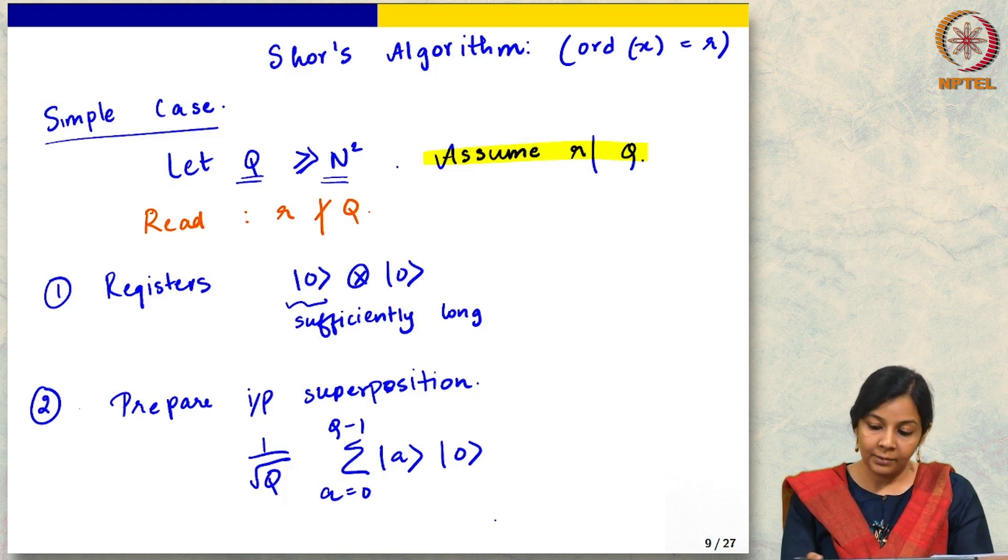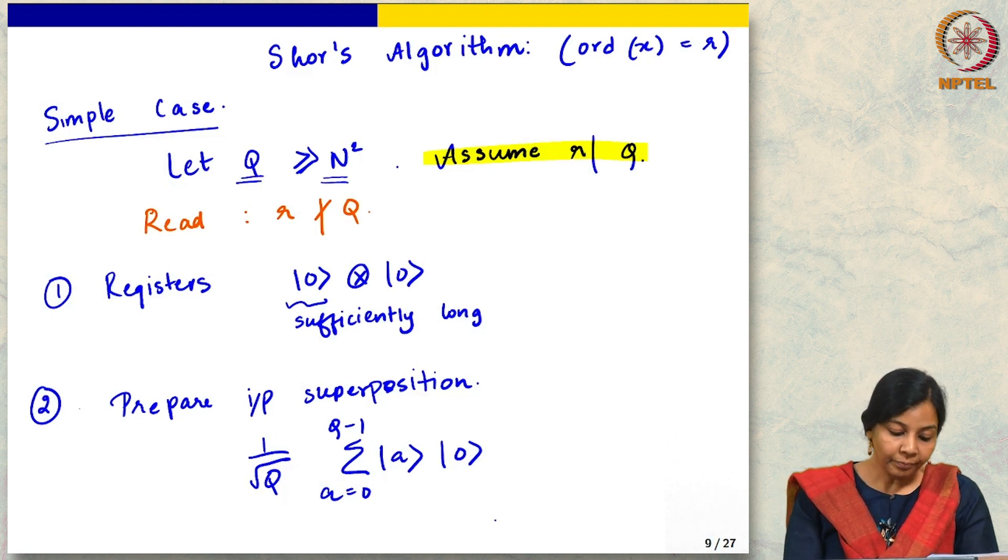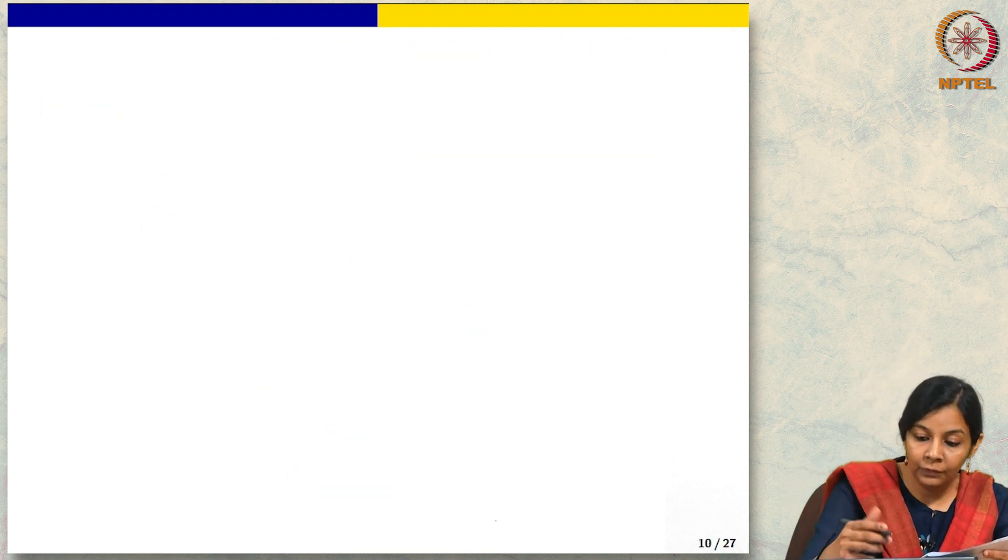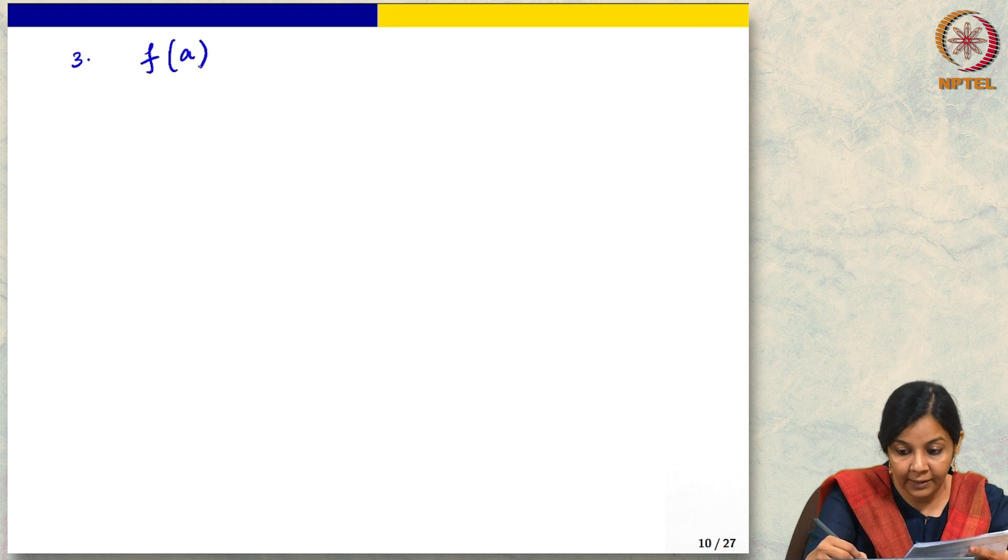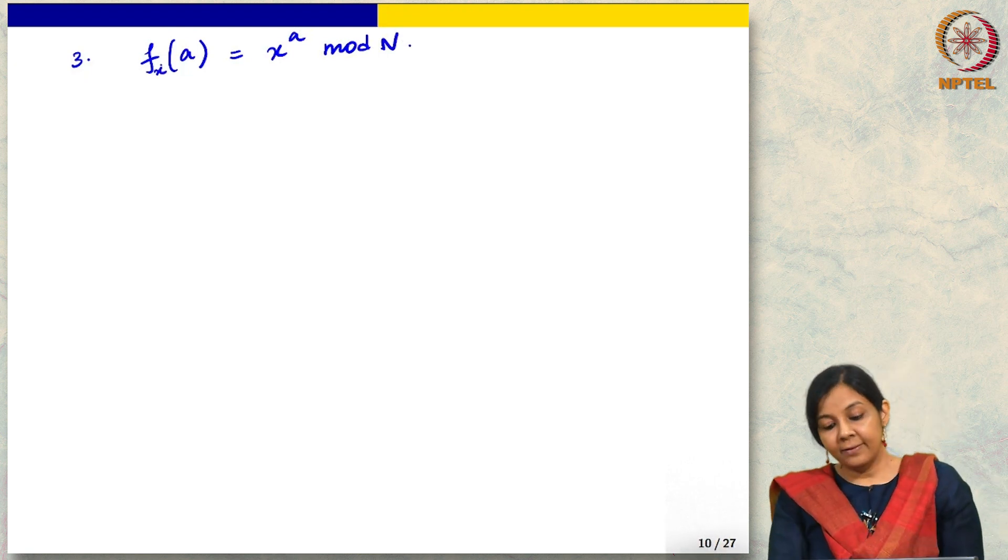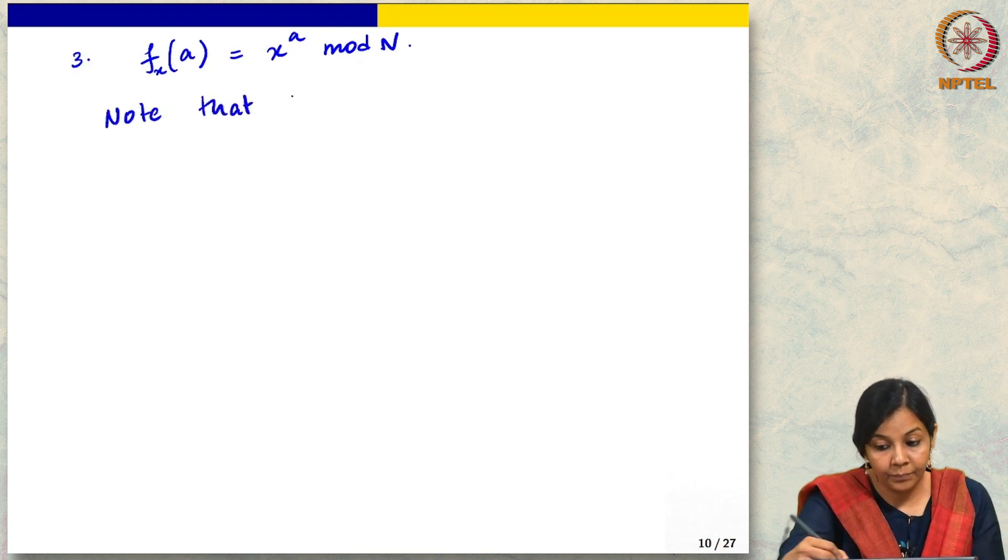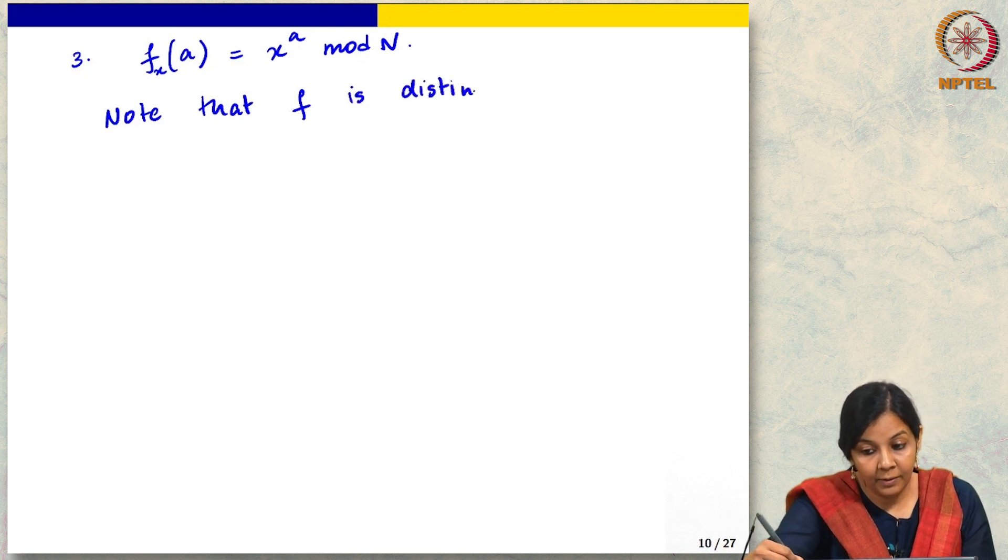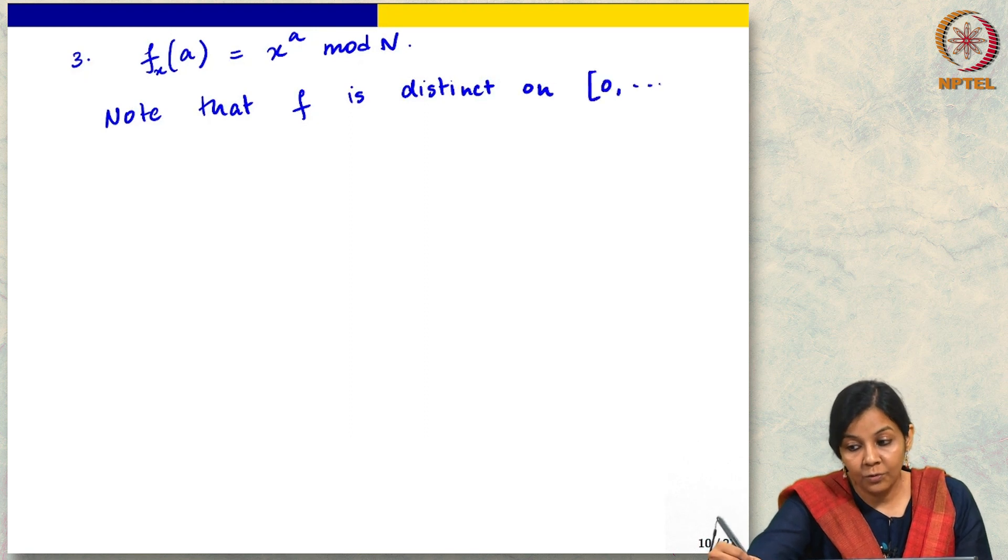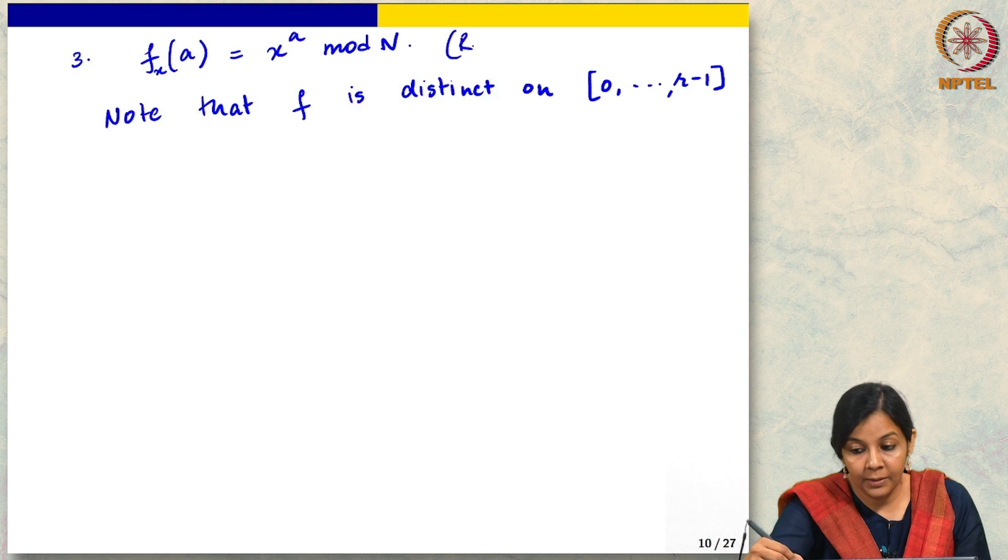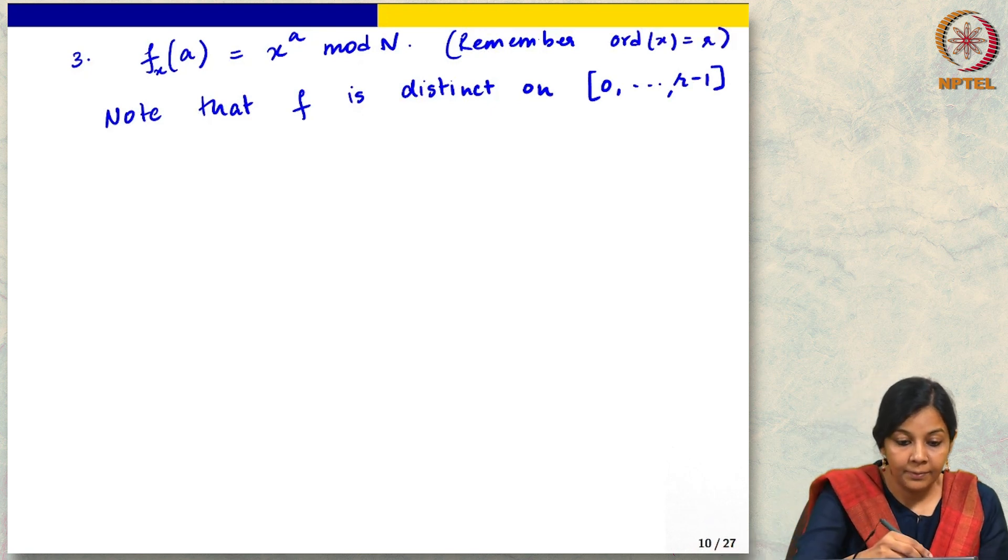So far this is standard. We took our initial 0 registers, we applied the Hadamard transform to get the superposition over all inputs, and now we need to define a function that we care about. Let us define f of a as x to the a mod n. This x is chosen uniformly, and we want to find the order. Now note that f is distinct on 0 to r minus 1.